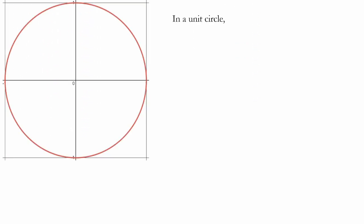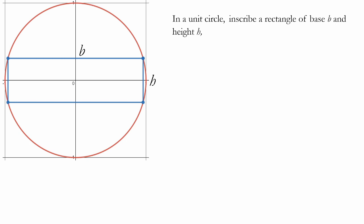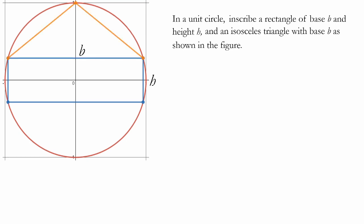In a unit circle, inscribe a rectangle of base b and height h, and an isosceles triangle with base b as shown in the figure. For what value of h do the rectangle and the triangle have the same area? If you'd like, please stop the video and try to work this out on your own.